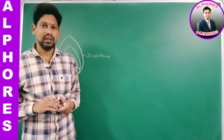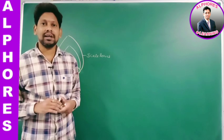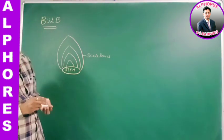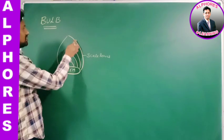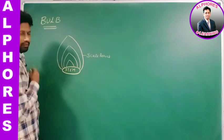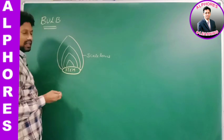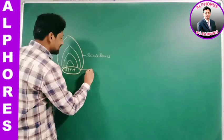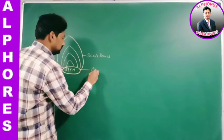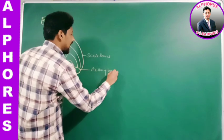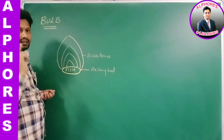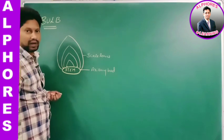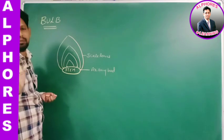Students, today we are in session 14, discussing underground stem modifications. Yesterday we discussed bulb. This is a scale leaf, and this is a stem. This becomes an axil, and the axil contains axillary buds. All these axillary buds develop into daughter bulbs. This daughter bulb, when it separates from the parent plant, develops into an independent plant. So axillary bud is used for vegetative propagation.